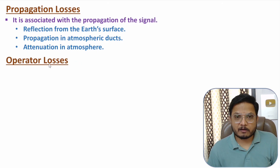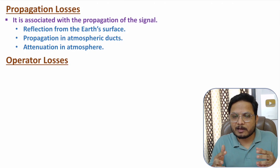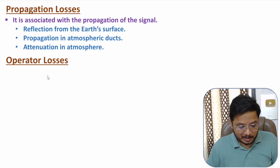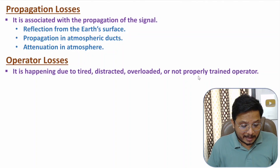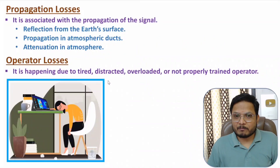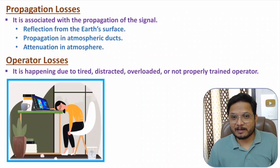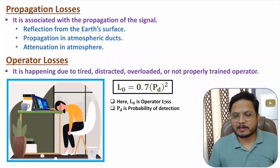The last category is operator loss. If an operator is tired, distracted, overloaded, or not properly trained, there is a possibility of losses in the radar system. Based on studies, operator loss is calculated as: L₀ = 0.7 × PD², where PD is the probability of detection and L₀ is the operator loss.